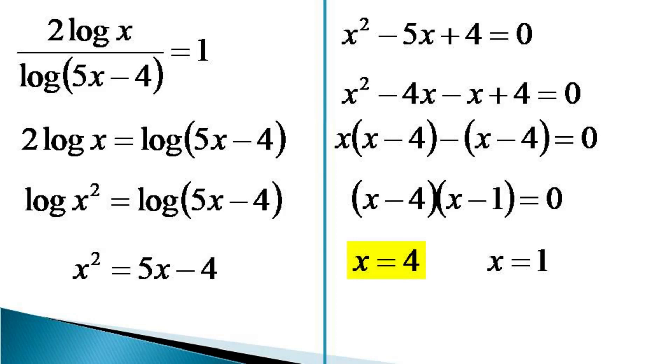But when we put x equals 1 in the original equation, the left hand side takes the form 0 by 0, which is undefined. So x equals 1 is not a solution, and hence this equation has only one solution: x equals 4. Thanks for watching.